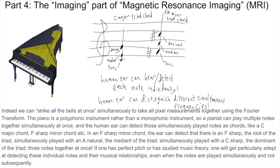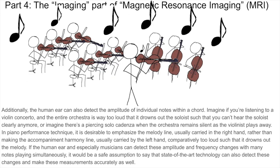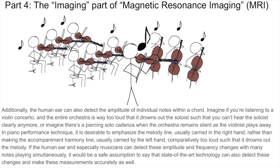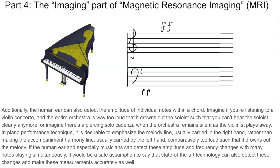If one has perfect pitch or has studied music theory, one will get particularly adept at detecting these individual notes and their musical relationships, even when the notes are played simultaneously together and not subsequently. Additionally, the human ear can also detect the amplitude of individual notes within a chord. Imagine if you're listening to a violin concerto and the entire orchestra is way too loud that it drowns out the soloist. In piano performance technique, it is desirable to emphasize the melody line usually carried in the right hand, rather than making the accompaniment harmony line comparatively too loud such that it drowns out the melody. So balance is good.